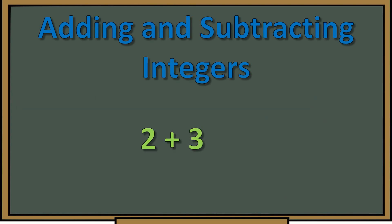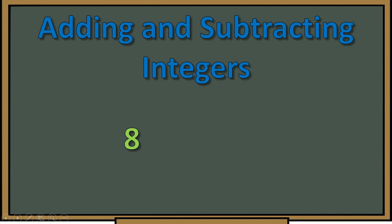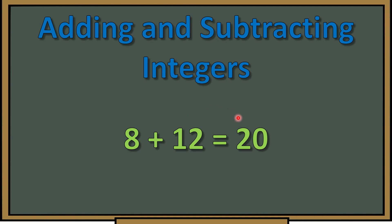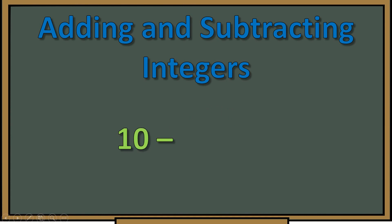Let's take a look at some examples we're going to be working with today. We have two plus three equals five — the plus sign means we need to add these two numbers, and two plus three equals five. Another example: eight plus twelve equals twenty. We have a plus sign between both numbers, so we add eight and twelve to get twenty.